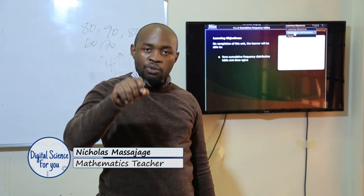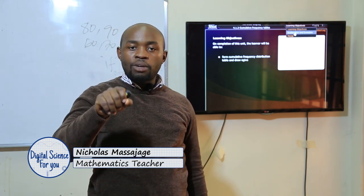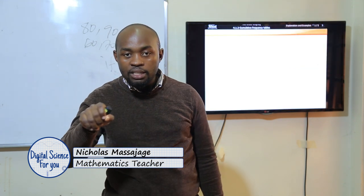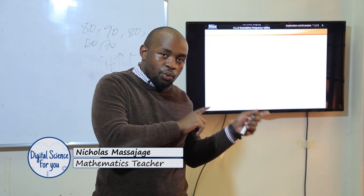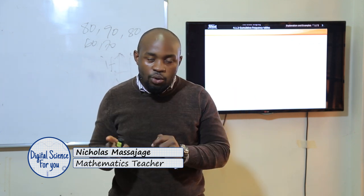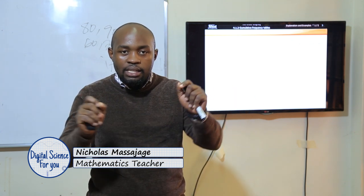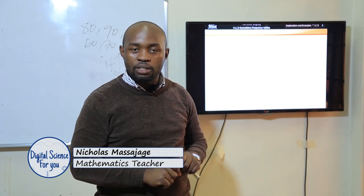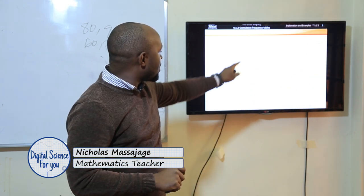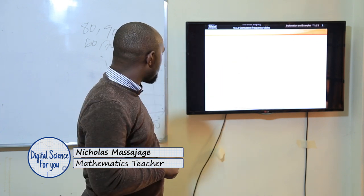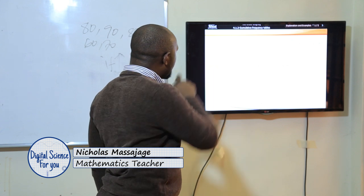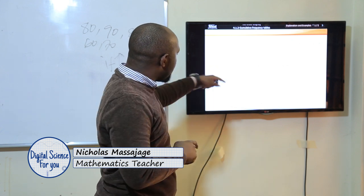So cumulation means you're adding on to something. To draw an ogive you cannot proceed unless you have cumulative frequencies. The first table we had for a frequency polygon and histogram only had the frequencies and the data — the number of students or the weight. Here we are going to formulate another table with an additional line showing the cumulative frequencies.